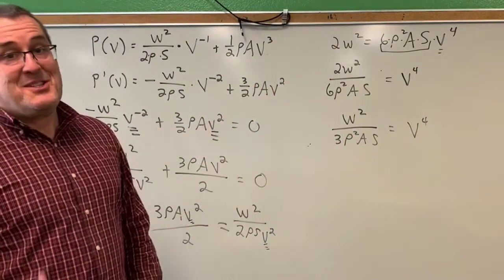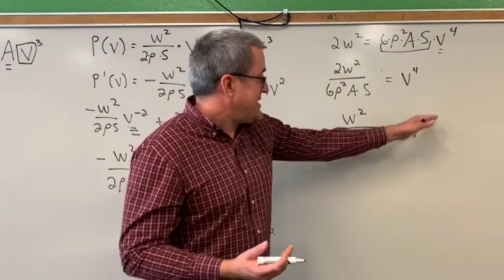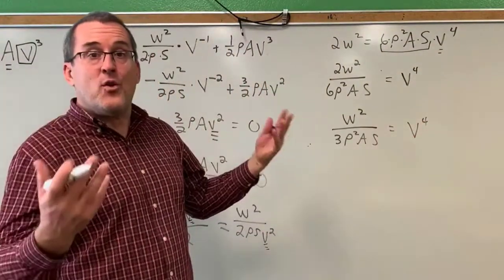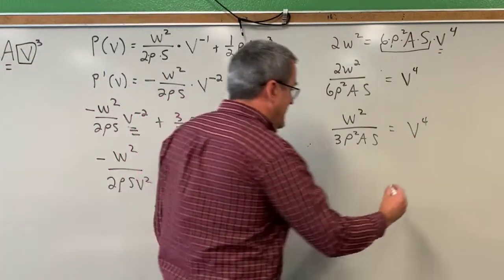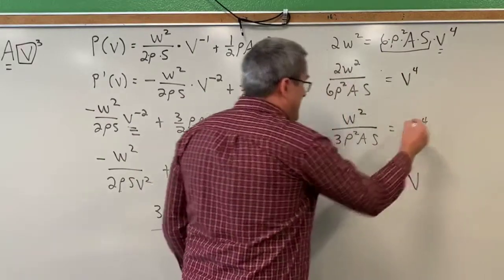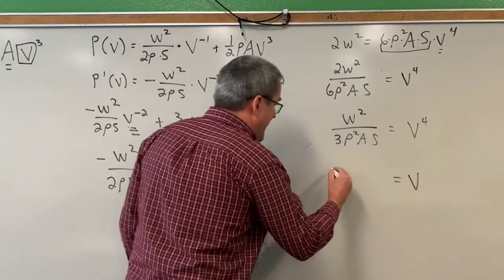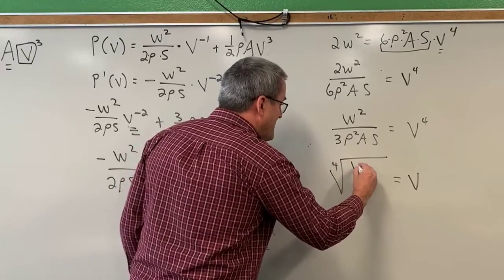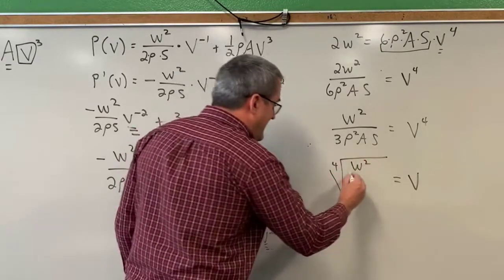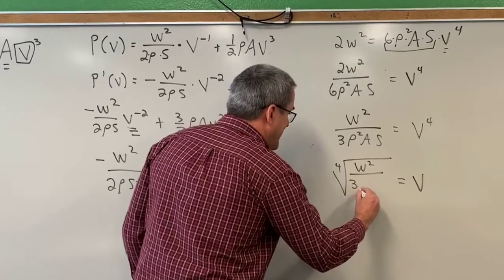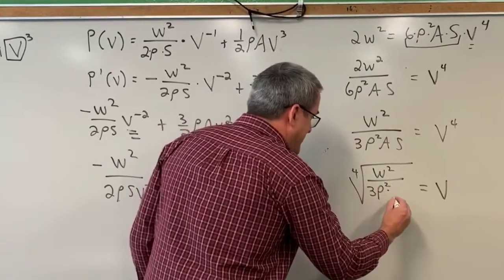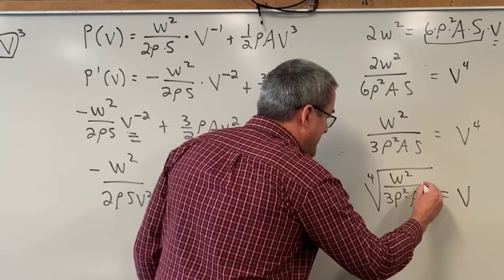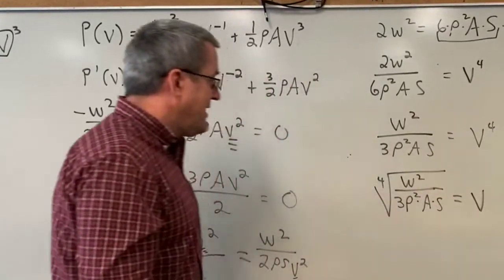One last one. To solve for V, since it's raised to the fourth power, we'll take the fourth root of both sides. So, the fourth root of V to the fourth is V. And the fourth root of all of this. The fourth root of the weight of the bird squared, divided by 3 times the density of the air squared, times that constant, times that constant, the size and the shape of the bird we're studying.